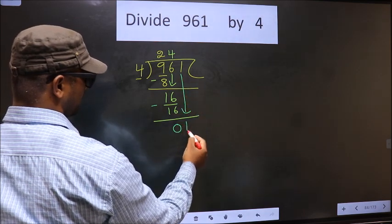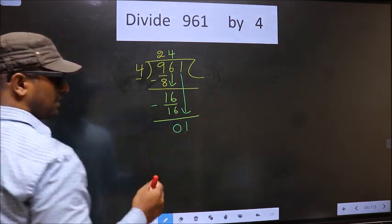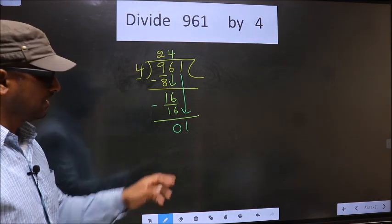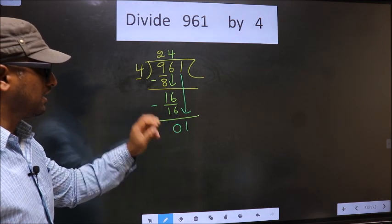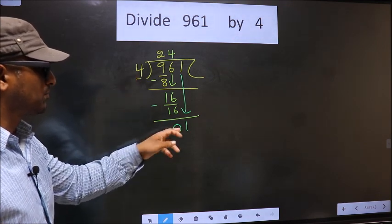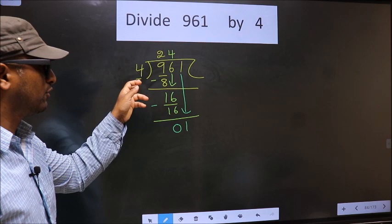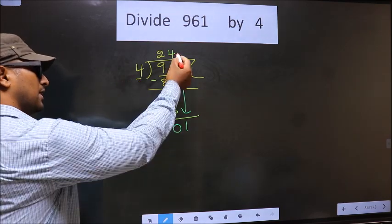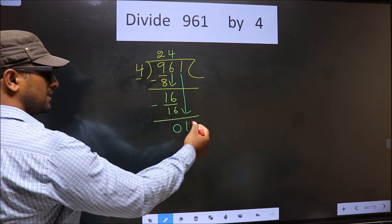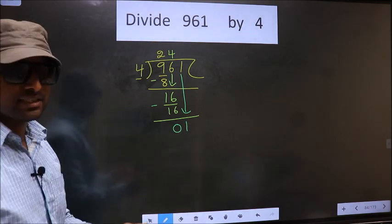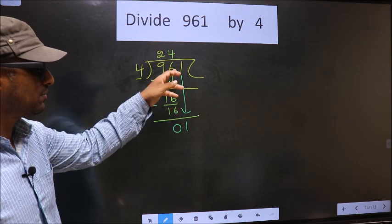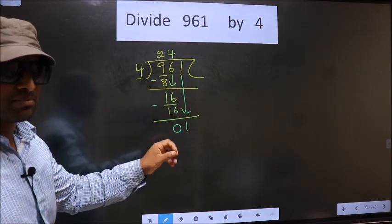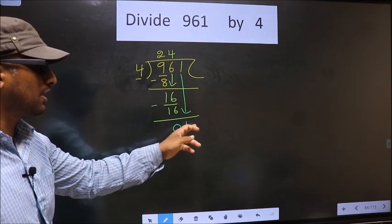This is where the mistake happens. Here we have 1, and 1 is smaller than 4. So what many do is they put a dot and take 0 here, which is wrong. Just now you brought the number down, and in the same step you want to put a dot and take 0, which is wrong.